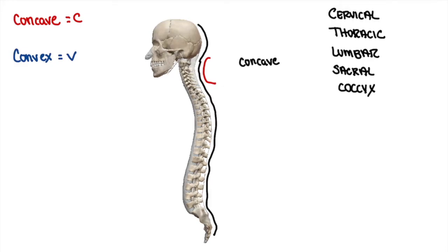Continuing to trace the pattern of the spine, as we get to the thoracic vertebrae, we'll see that it bows out a little bit, almost resembling the letter V. It's more of a V than a C. So we would say that the posterior segment of the thoracic spine is convex posteriorly.